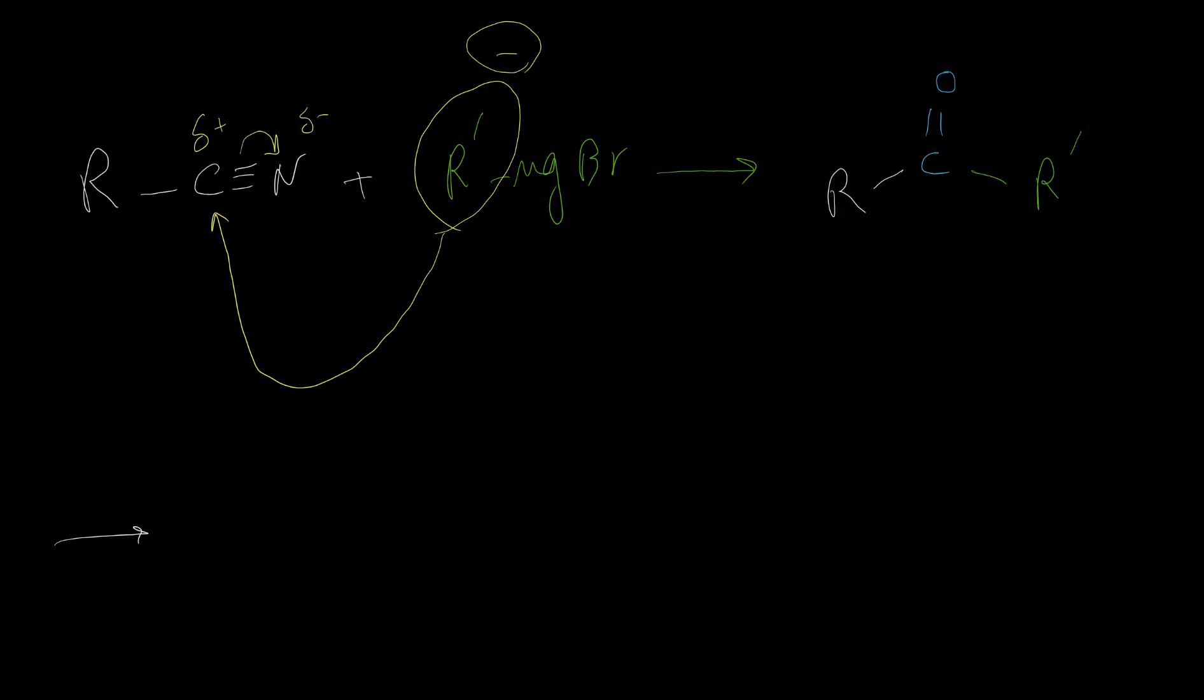So for first step, we have R, then we have C double bond N negative, and then we have R' group on the other side. And of course, this MgBr positive will be there as well. So this reaction has two steps. Step one, addition of Grignard.